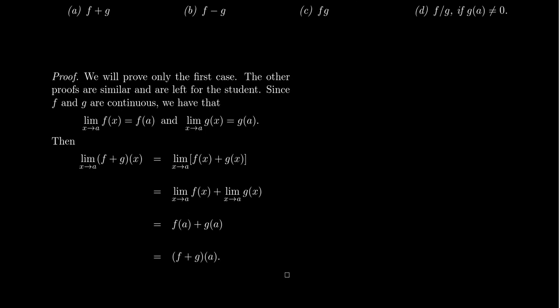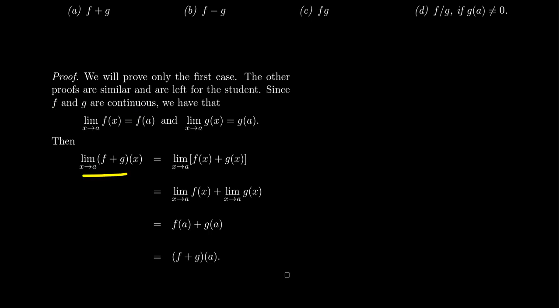Since f is continuous, that means the limit as x approaches a of f of x is equal to f of a. And because g is continuous, that means the limit as x approaches a of g of x is going to be g of a. That's what continuity is about — the function agrees with the limit. Now let's consider the limit of f plus g as x approaches a.